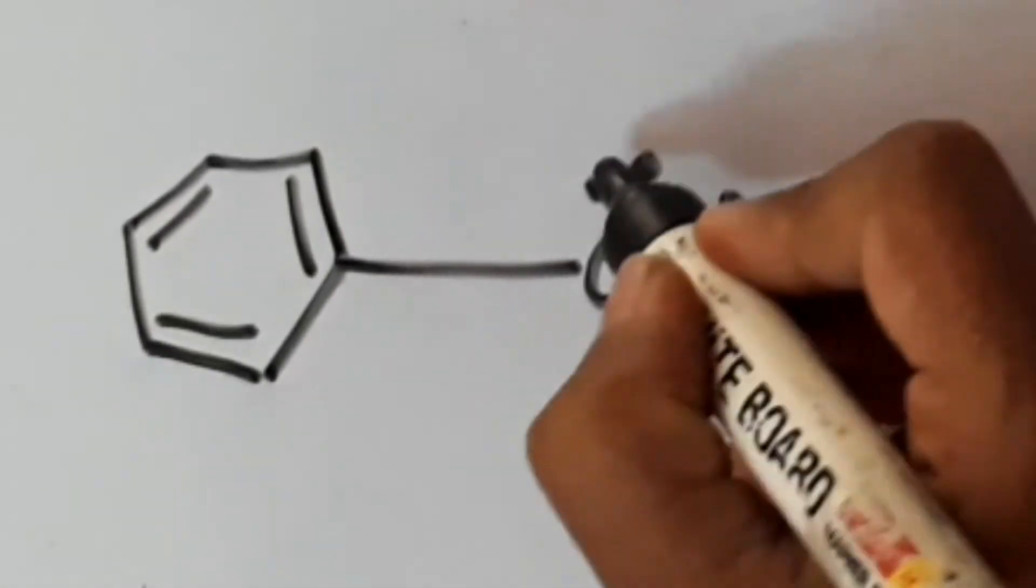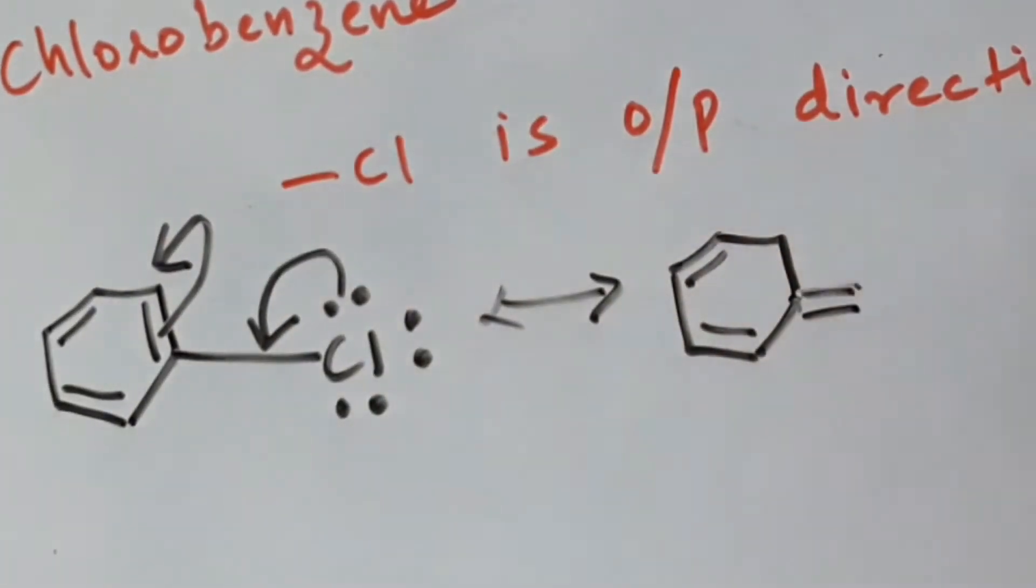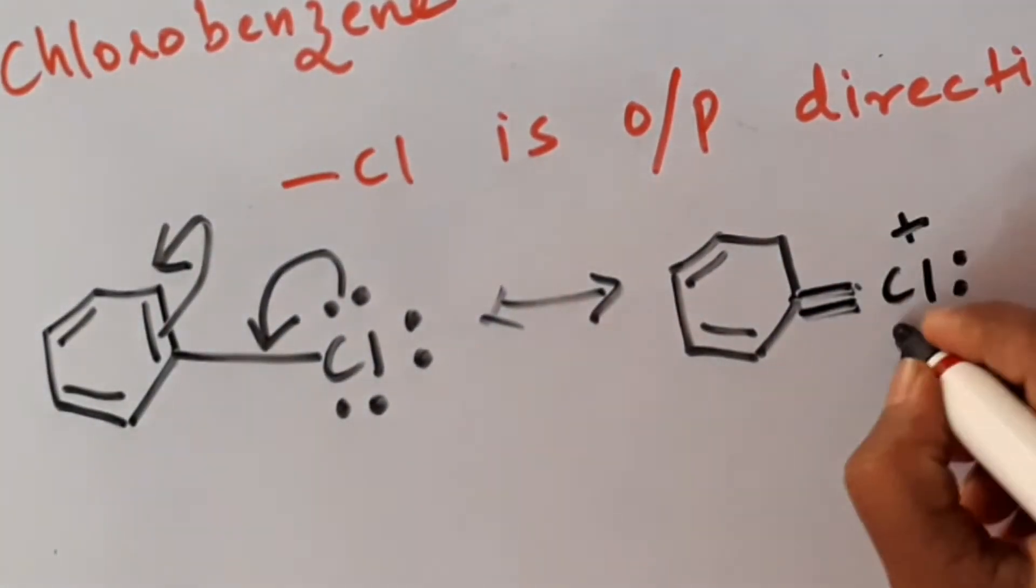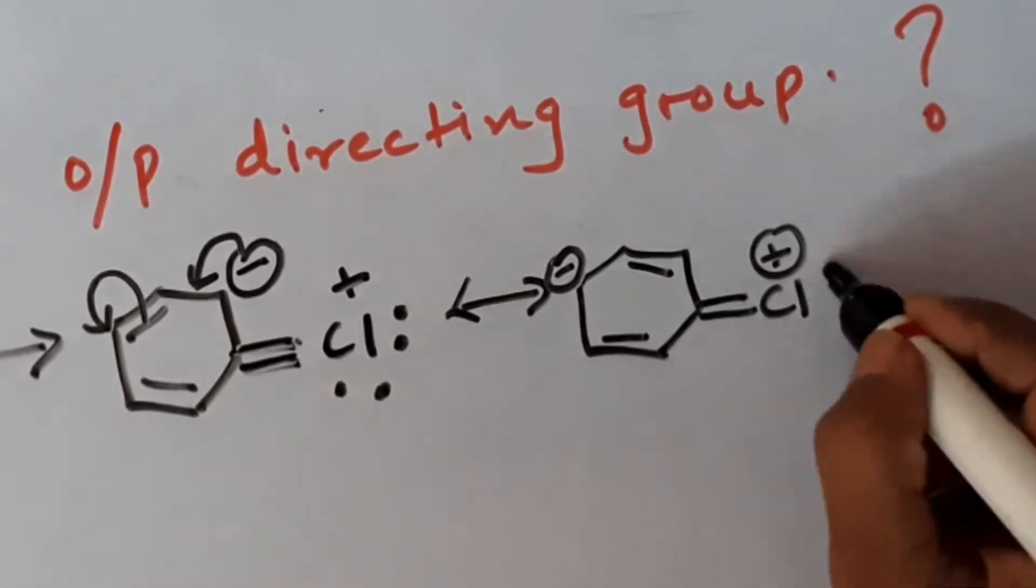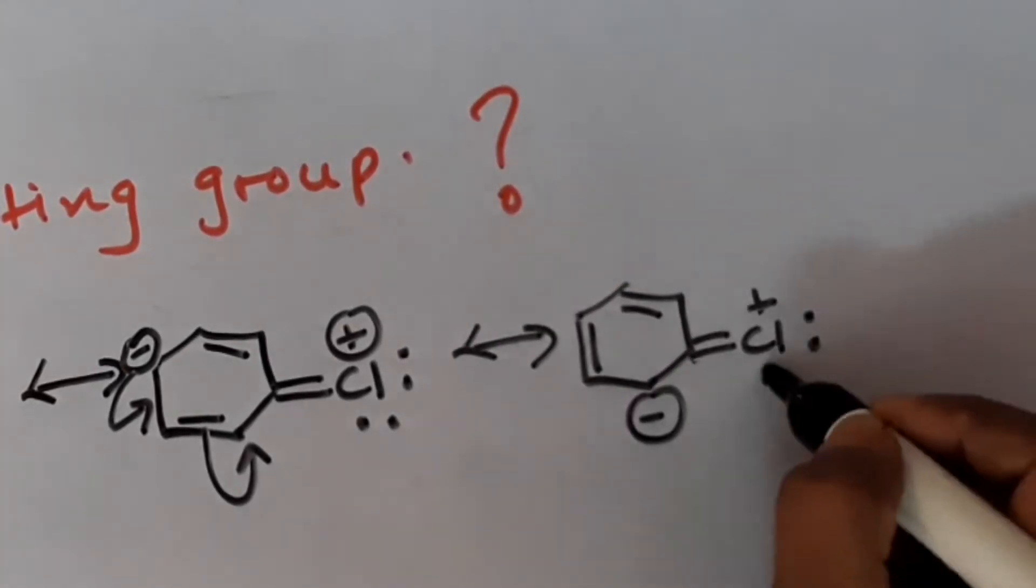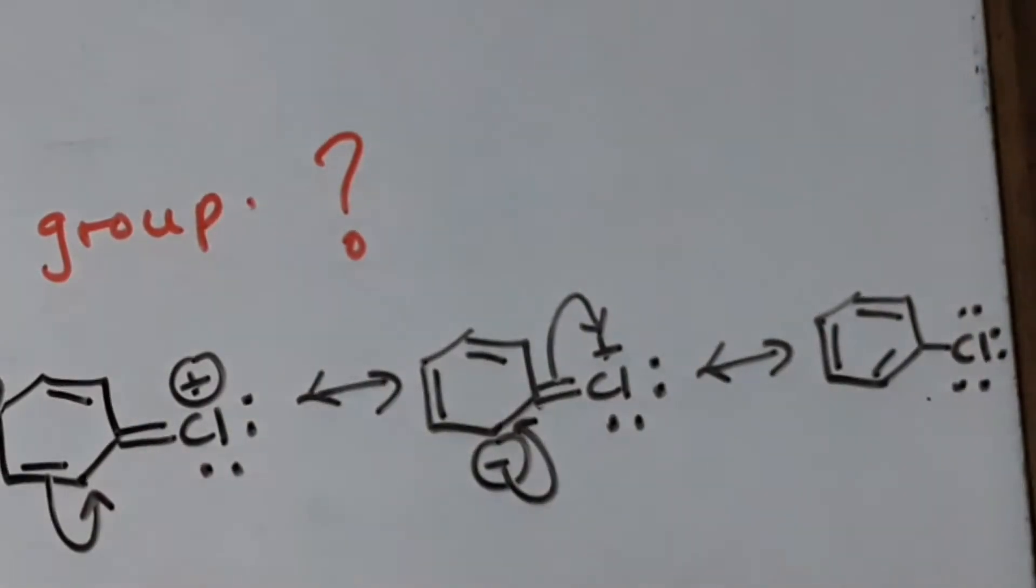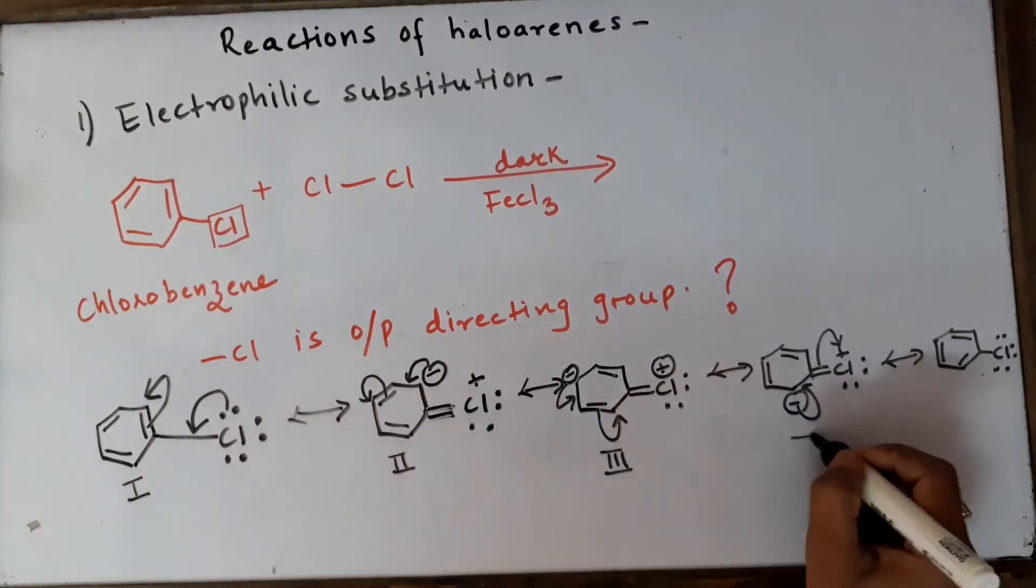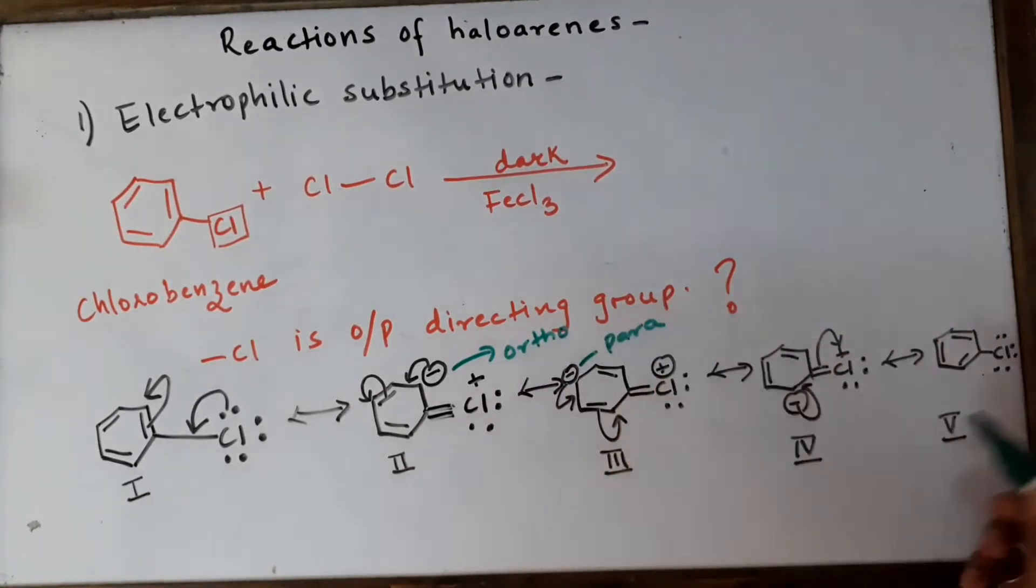Now you can see that the electrons from chlorine are getting delocalized on benzene at position ortho and now at para position, and now again at ortho position. The negative charge is coming and finally the chlorobenzene is neutralized.